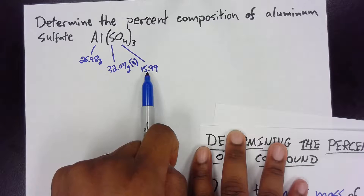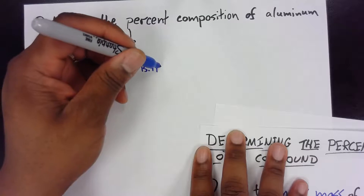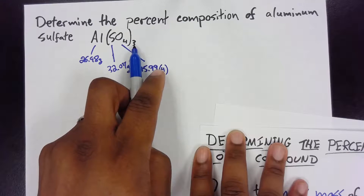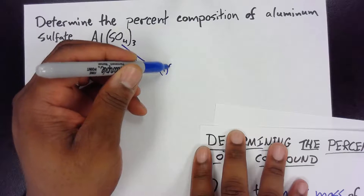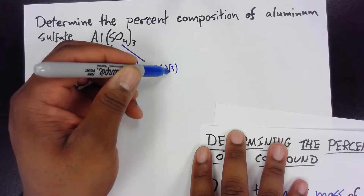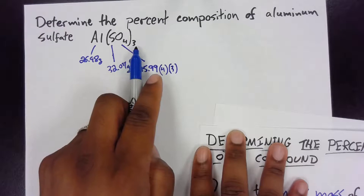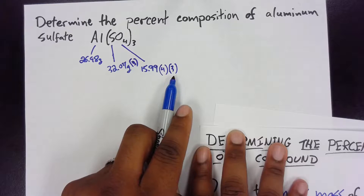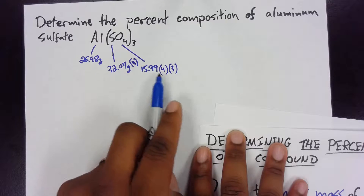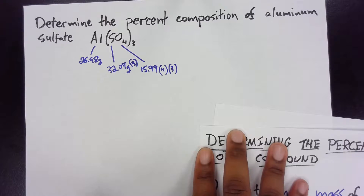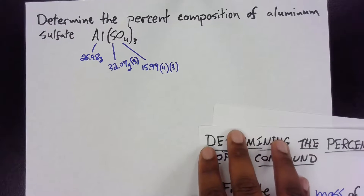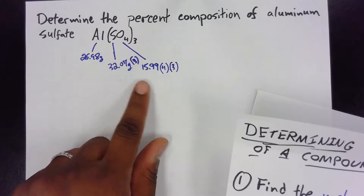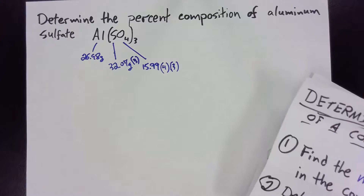That three applies to the sulfur and also to the oxygen. The oxygen has a molar mass of 15.99, but there are four oxygens, so we multiply by four. We also multiply by three because that three is distributed to both the oxygen and the sulfur. So oxygen will be 15.99 times four times three. Then we determine the mass of each element by doing the math.